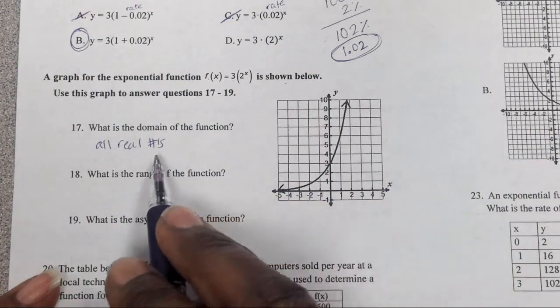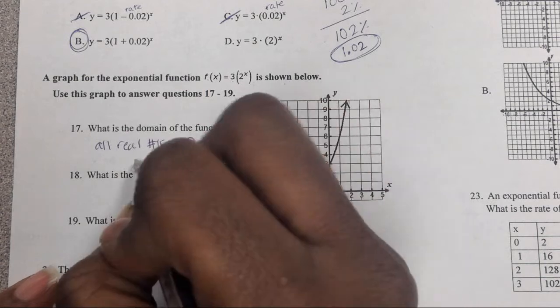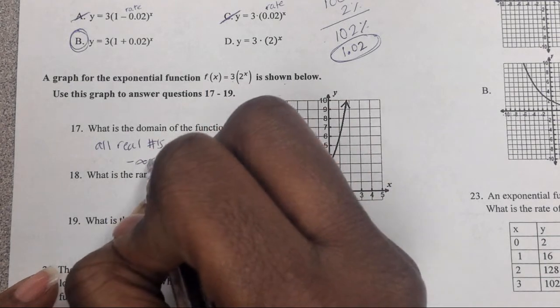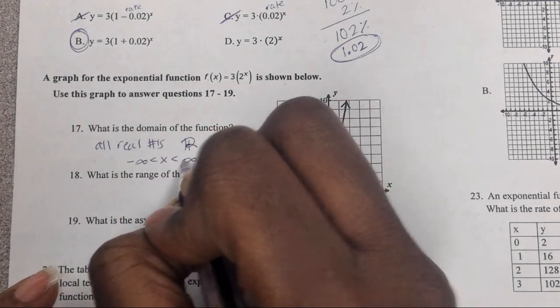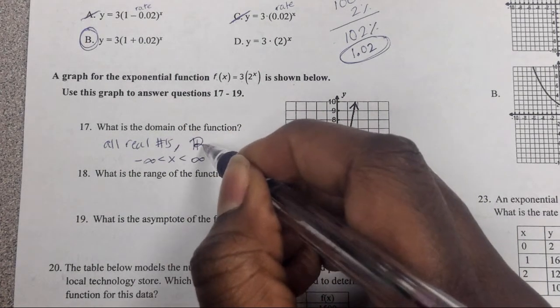We don't have to worry about any special domain because it doesn't give us a word problem or anything. You can write it like this, you can write it like that, or you can write it from negative infinity to positive infinity. These are three different ways you can write the domain of all real numbers.